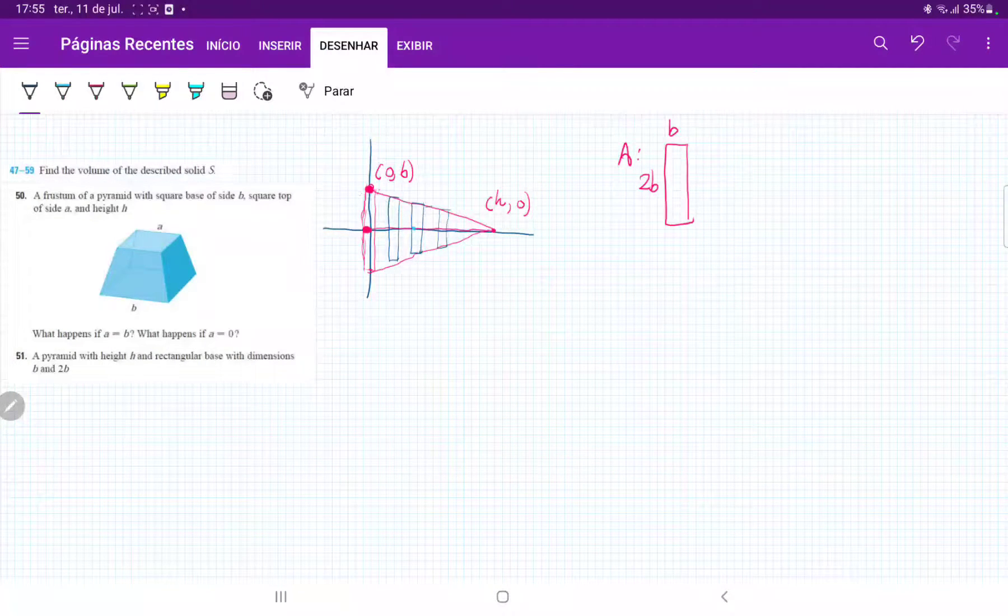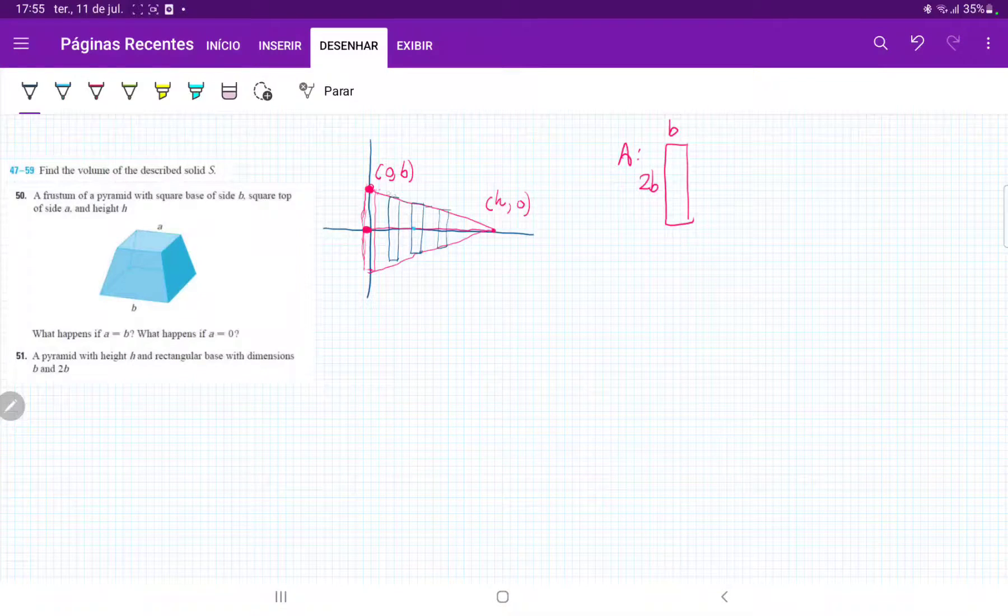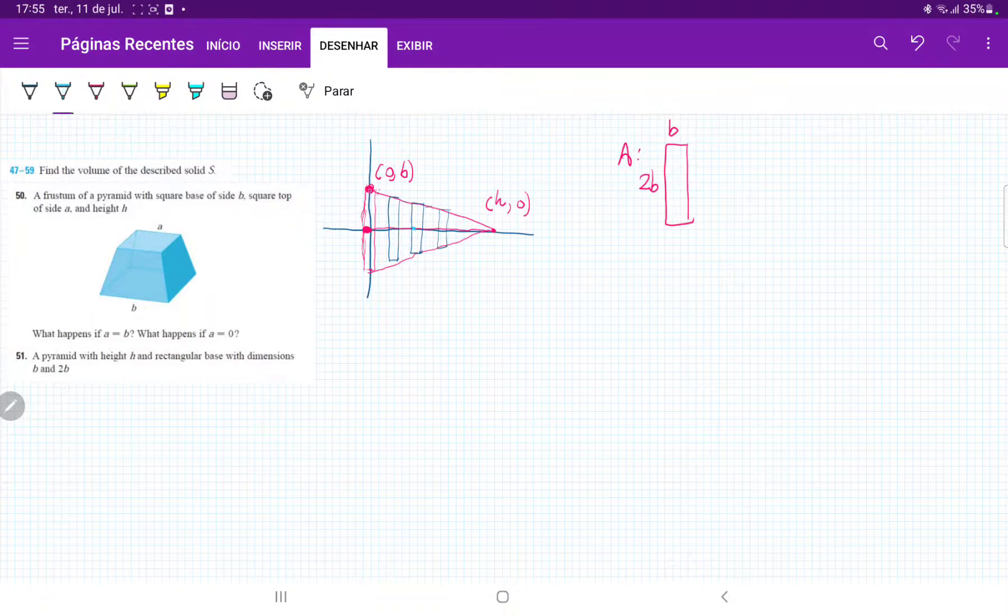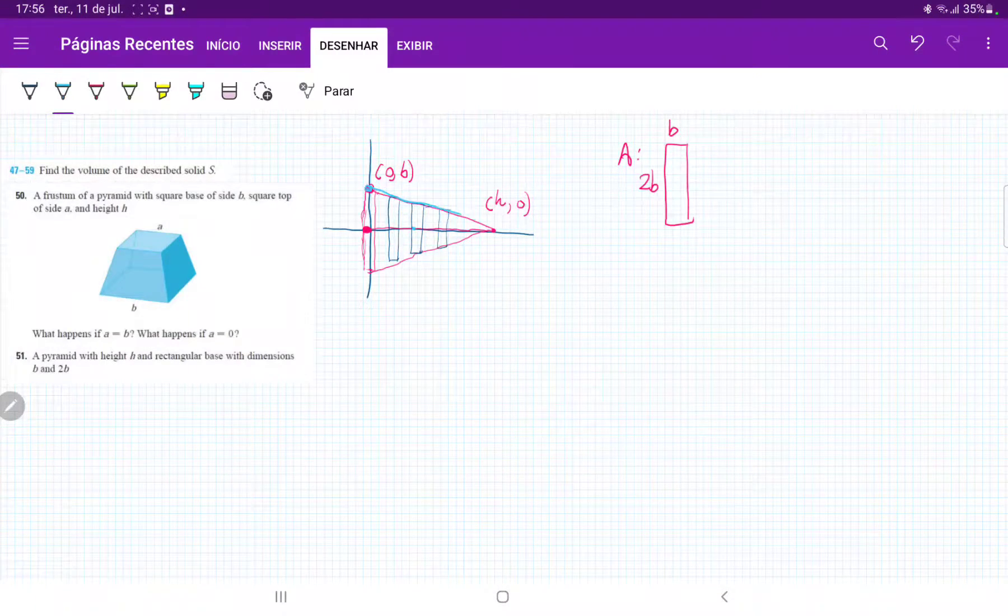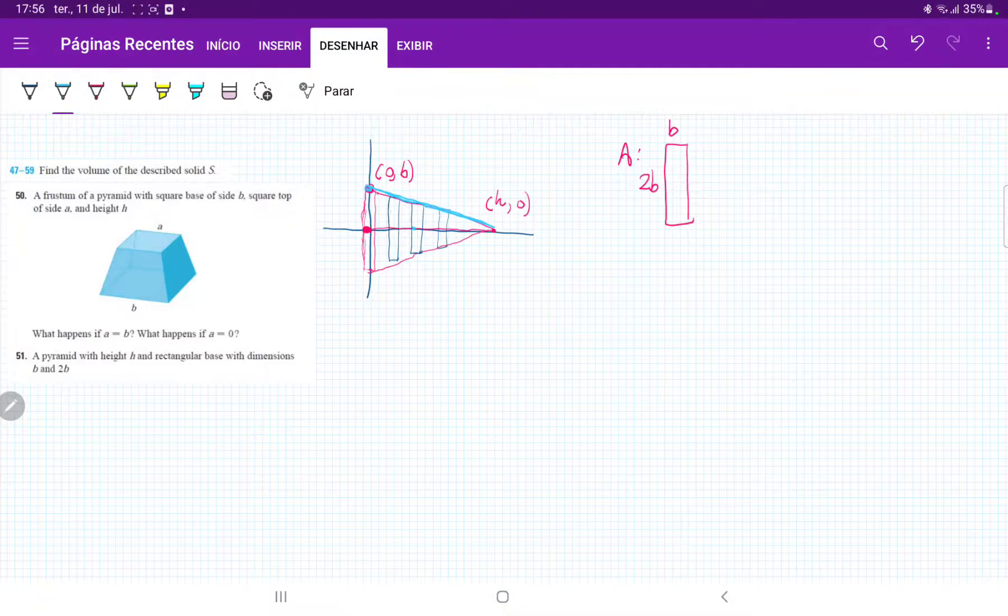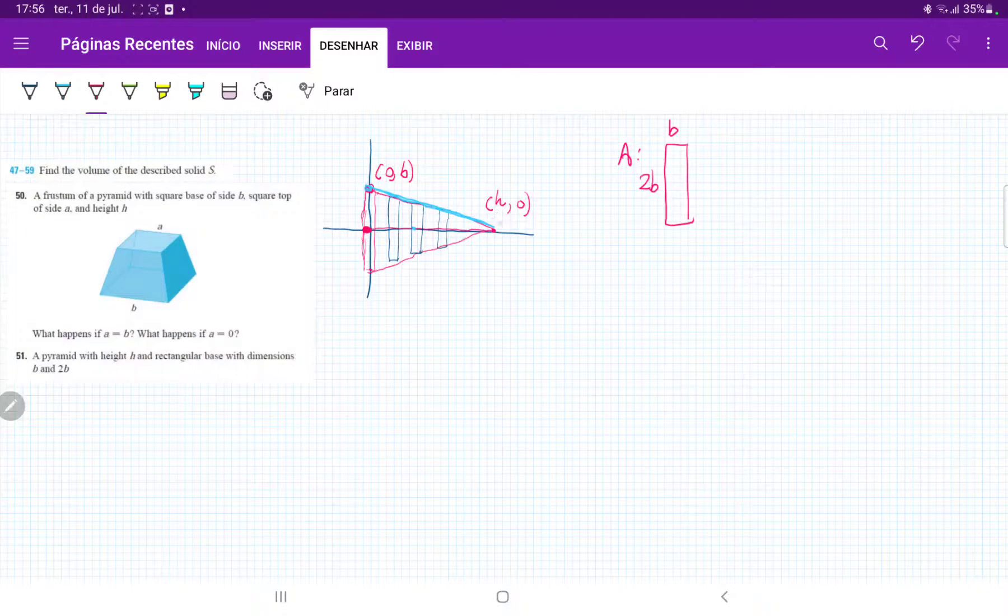And as we can see here, the area is going to change according to the height of this line that connects these two points. That's going to be our function that describes the changing height of these rectangles, and therefore the area is going to go according to this height. So the first thing that we have to do is we have to actually find the function that connects these two points.